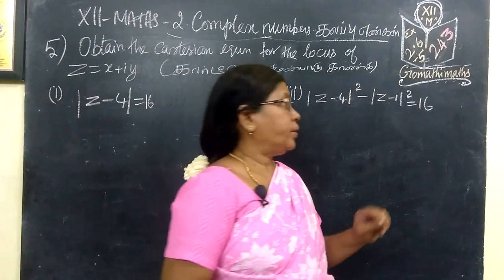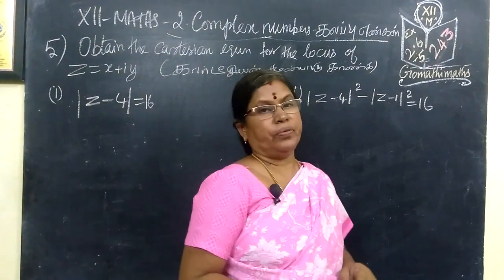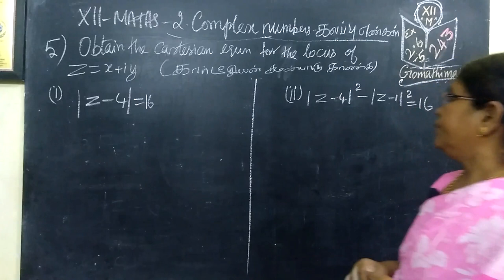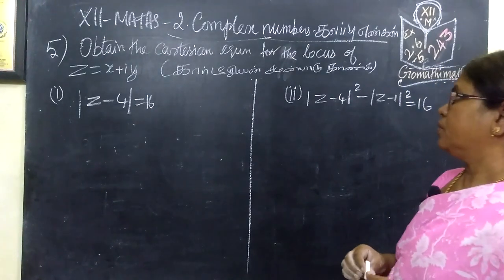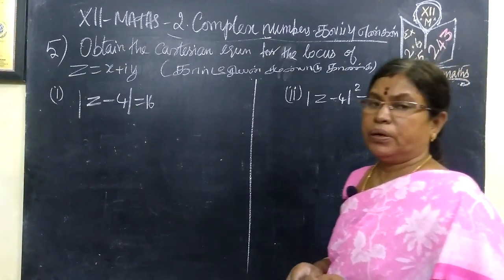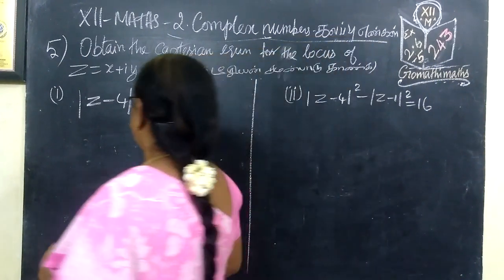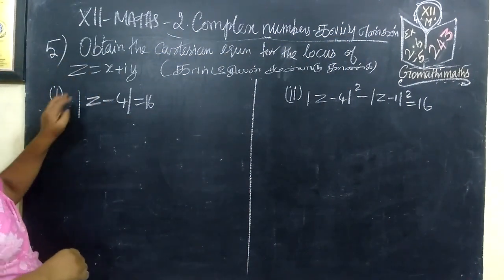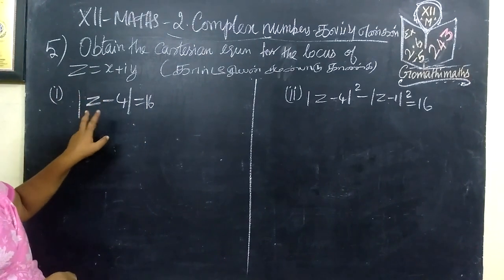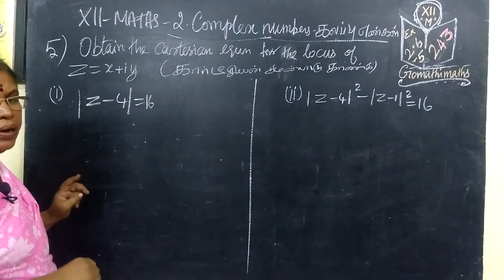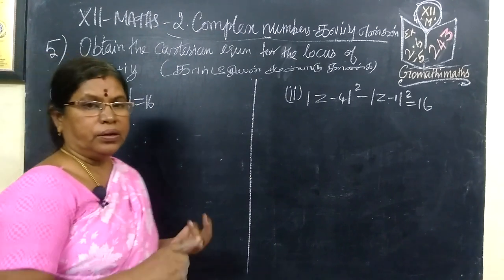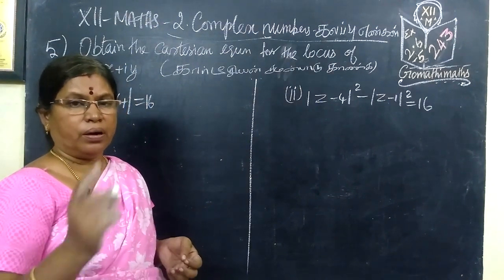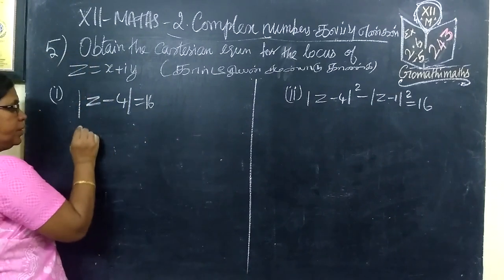Exercise 2.6, Question Number 5. In this question they are asking for the Cartesian equation for the locus. Cartesian equation means in the last step we find only x, or y, or both x and y.